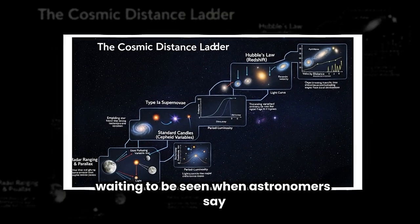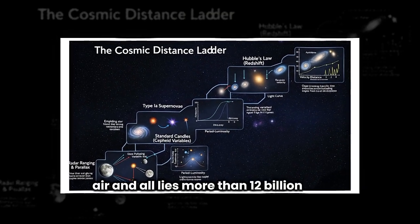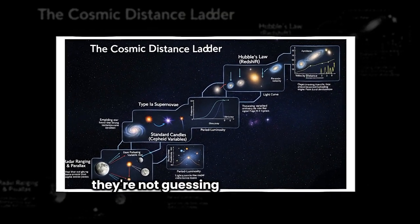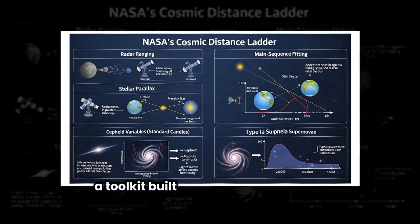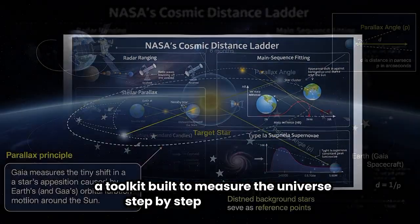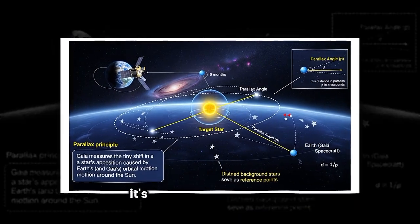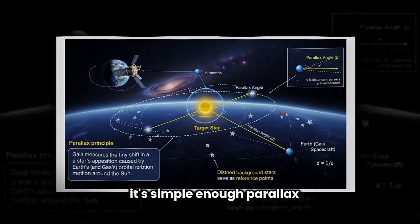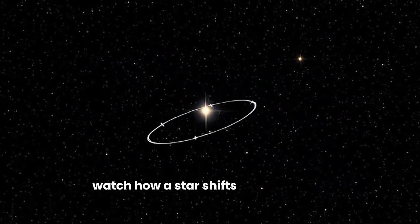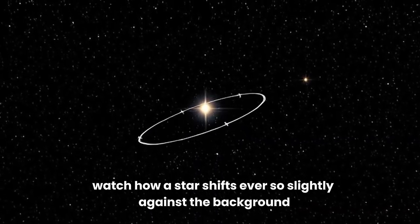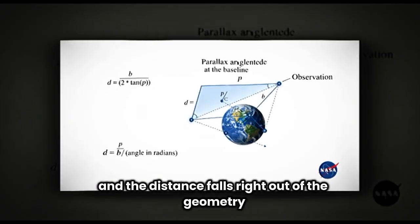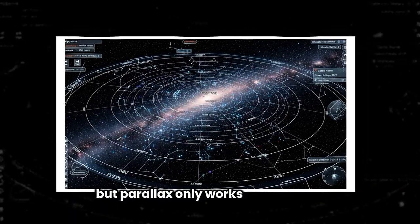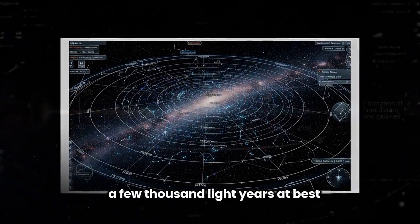When astronomers say Earendel lies more than 12 billion light-years away, they're not guessing. They're leaning on the cosmic distance ladder. A toolkit built to measure the universe step by step. For nearby stars, it's simple enough. Parallax. Watch how a star shifts ever so slightly against the background as Earth moves around the Sun, and the distance falls right out of the geometry. But parallax only works close to home, a few thousand light-years at best.